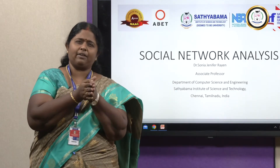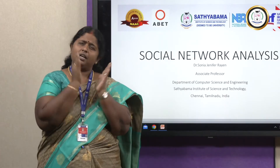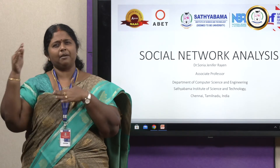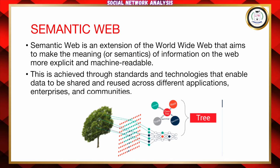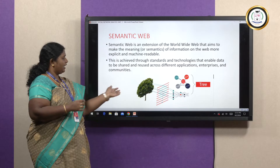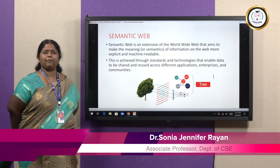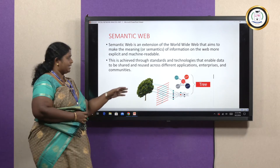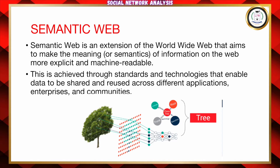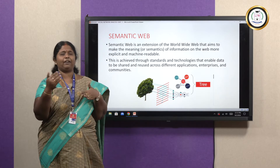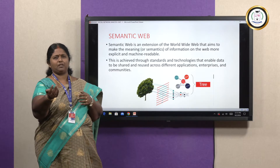Semantic web is nothing but an extension of our existing worldwide web, because you are going to search for something based on your request. This diagram will just help us have a clear look. Here, what we are doing is a tree — we are using a convolutional neural network. It's a diagrammatical representation where I was talking about annotation, clearly annotating or labelling what are my leaves, what are my trunks, and what is going to be my root or branch.